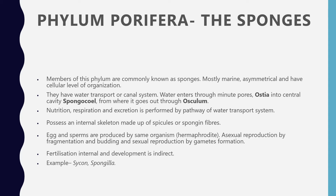For transport, a water transport system is present. Water enters the body through pores called ostia, bringing food along with it. Nutrition, respiration, and excretion are all performed via the water transport system. They possess an internal skeleton made up of spicules or spongin fibers — this is very important.